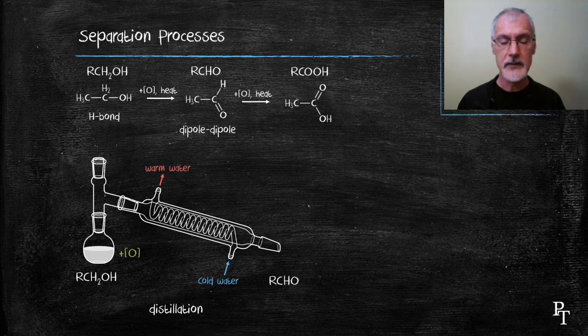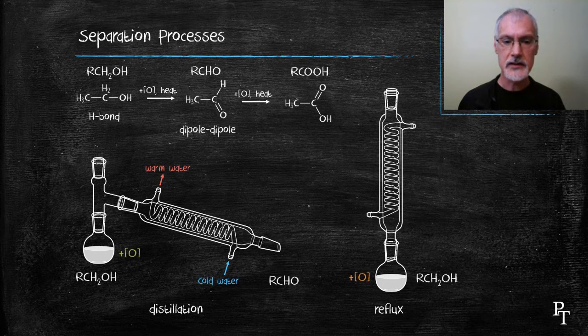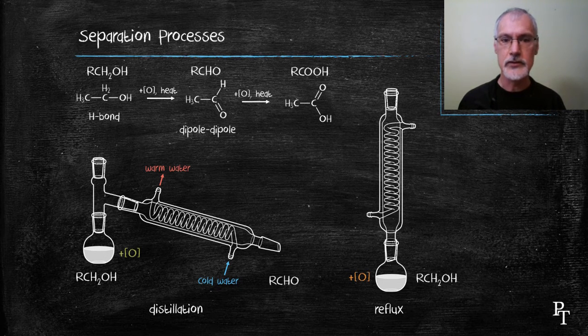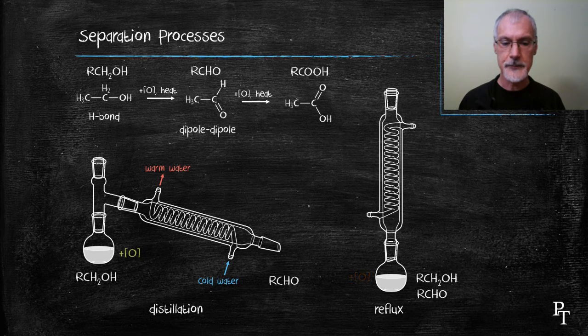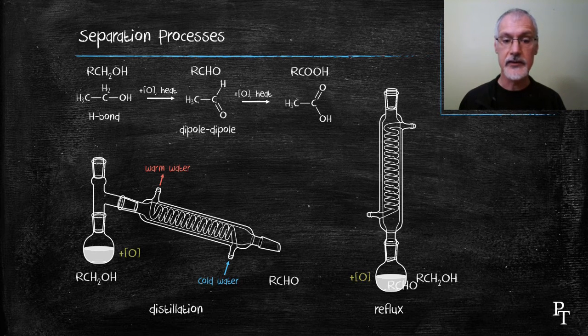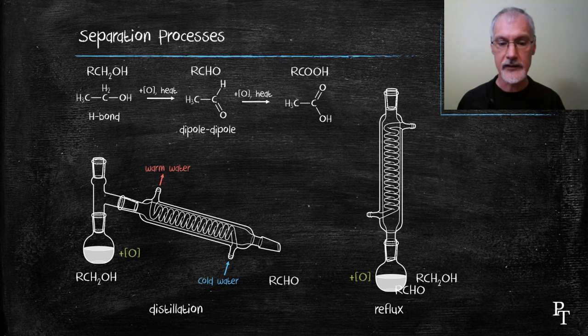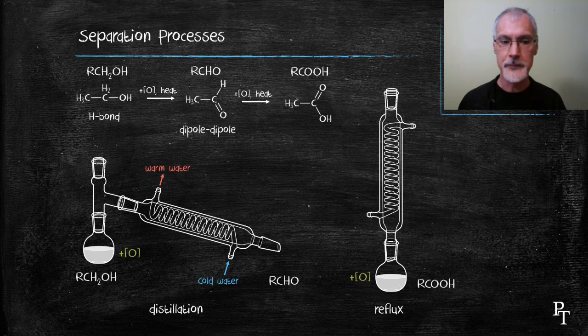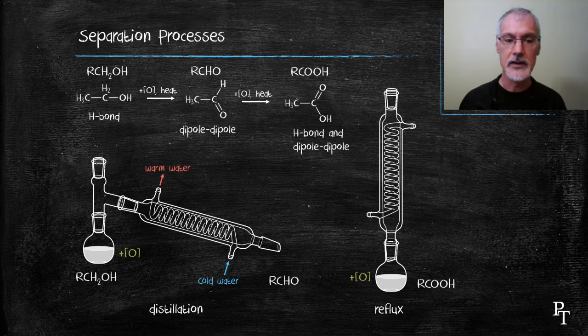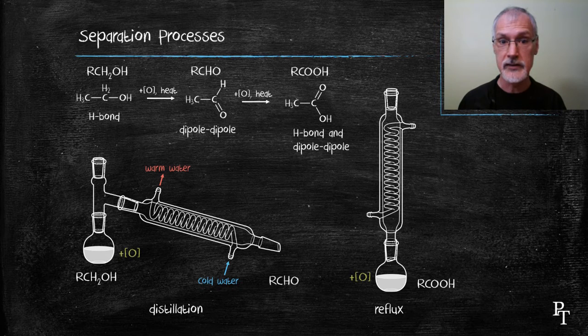But if I wanted to go further, then I need a different setup. This is called a reflux chamber. In this particular setup, I keep the condensed liquid trapped in my oxidizing container. So again, in the first step, I oxidize the substance and produce my aldehyde. That aldehyde rises and condenses and falls back down. When it falls back down, it comes in contact with more oxidizing agent. So as a result, I can continue to oxidize it all the way to the acid form. And here I form something which can make both hydrogen bonds and dipole-dipole and has a much higher boiling point than either of my two predecessors.